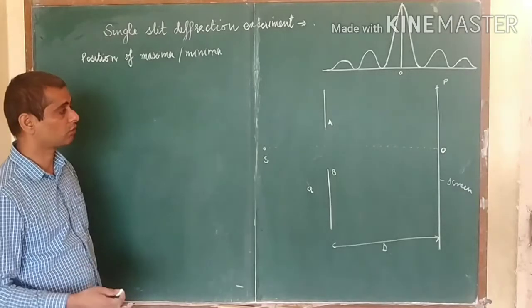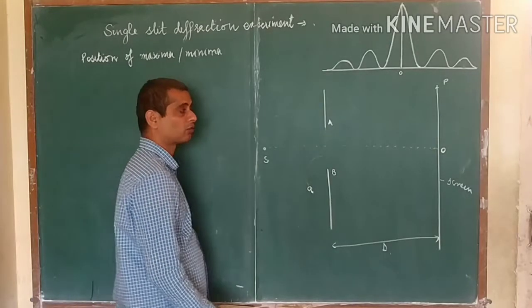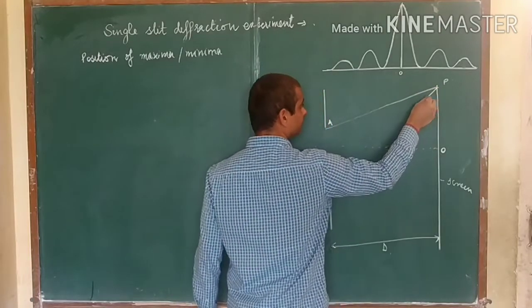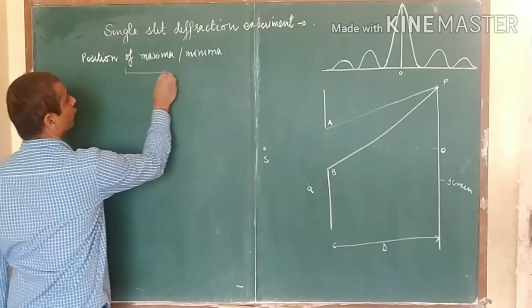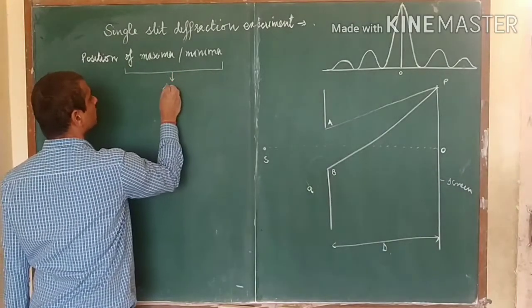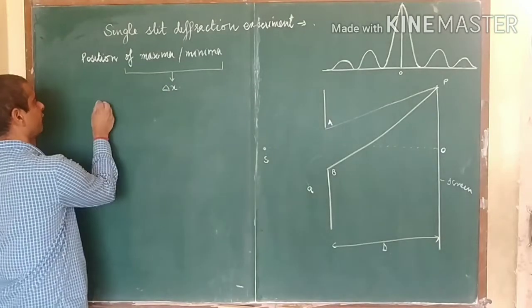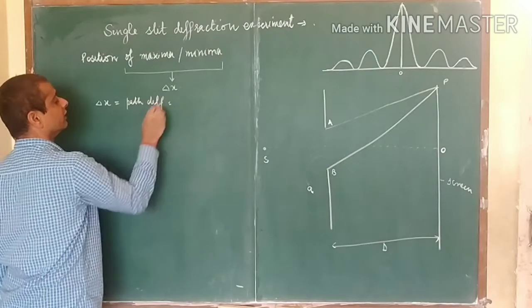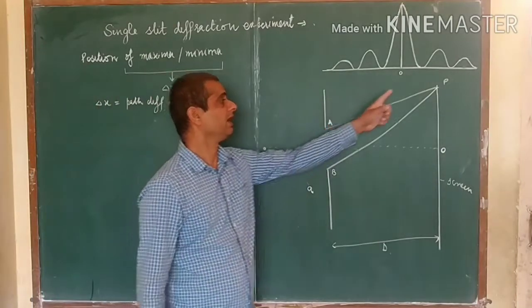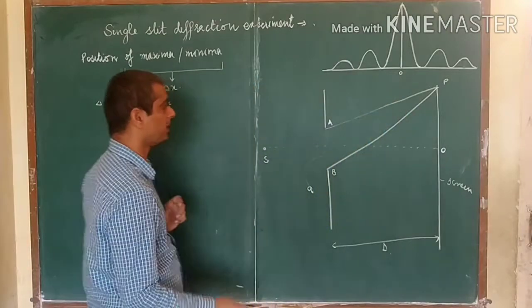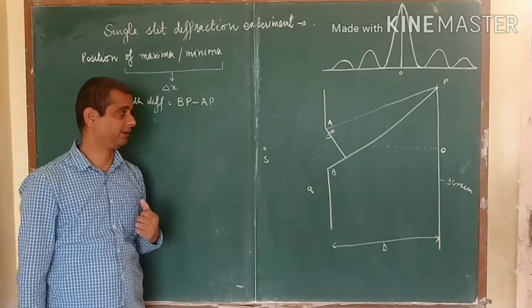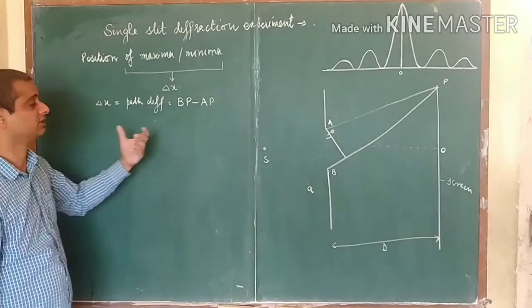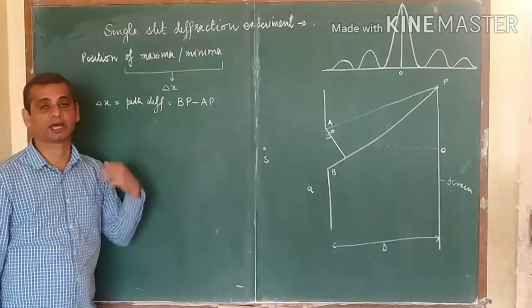To calculate the maxima or minima, we have to calculate the path difference. The light coming from point A and the light coming from point B — to find out the position of maxima or minima, we should first calculate the path difference. We can calculate it by applying Pythagoras theorem or by another method. Here I am using another method.